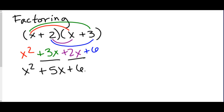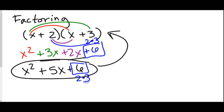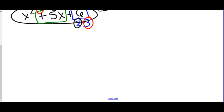Factoring says: start with this and take it back to the original. I got the number 6 by multiplying 2 times 3, and I got the 5x by adding 3x plus 2x. So they're related — they each contain a 2 and a 3. We have to figure out that they multiply to the last term but add to the middle term. That's going to be our pattern for factoring.